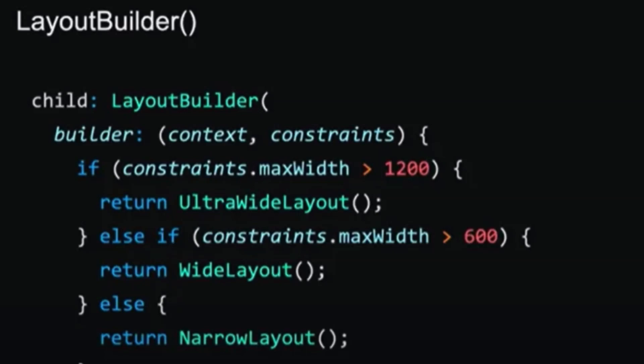The second option is Media Query, which is quite simple and used in many ways. In screen size management it can also help us. With Media Query we are not only able to get widget height and width, but also the overall screen size and device orientation at runtime. As soon as those configurations change, the build method will also run, ensuring widgets update according to the latest data.